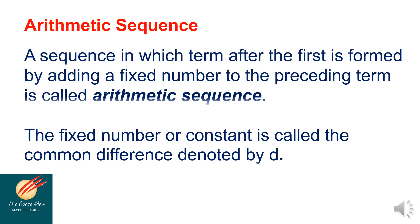An arithmetic sequence is a sequence in which each term after the first is formed by adding a fixed number to the preceding term. This fixed number or constant is called the common difference, denoted by d.